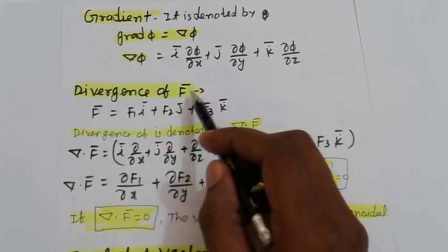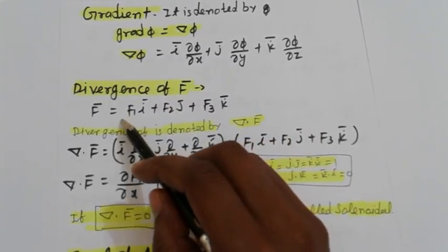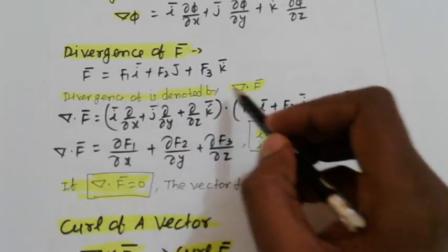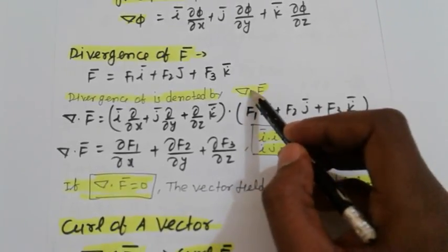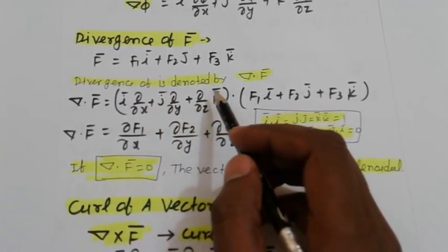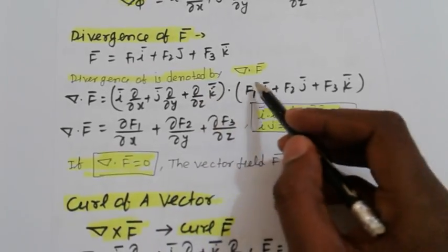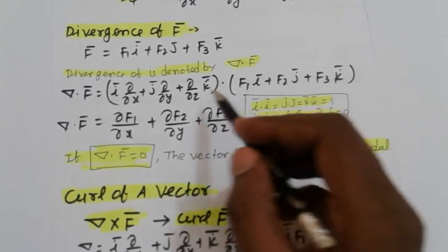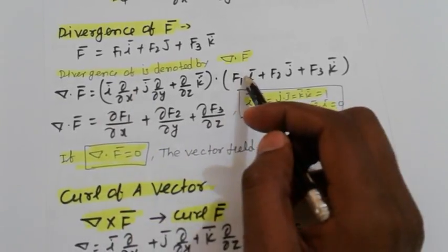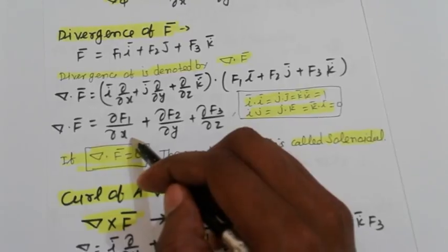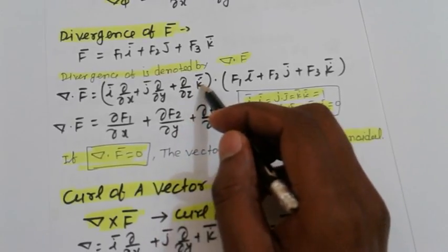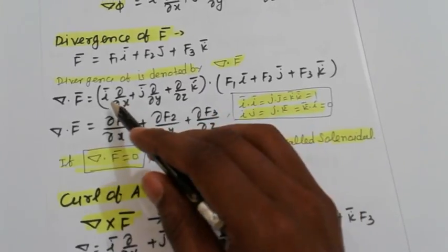Divergence of a vector: let F = F1·i + F2·j + F3·k. Then divergence of F is denoted by nabla dot F, which uses the dot product. Expanding: nabla dot F = (∂/∂x)·i + (∂/∂y)·j + (∂/∂z)·k dotted with F1·i + F2·j + F3·k. Since i·i = j·j = k·k = 1, we get ∂F1/∂x + ∂F2/∂y + ∂F3/∂z.